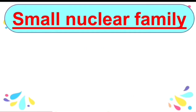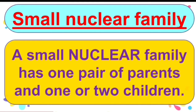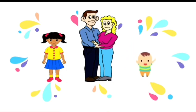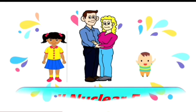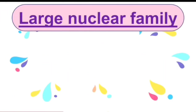First, I am discussing about the small nuclear family. A small nuclear family has one pair of parents and one or two children. Here is Mona — she has parents and her younger brother, so her family is a small nuclear family.